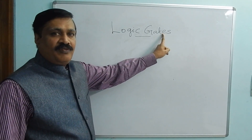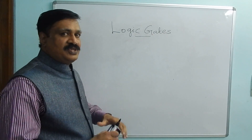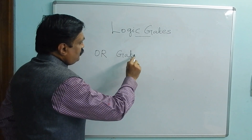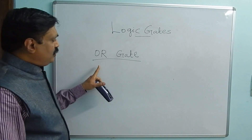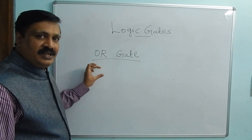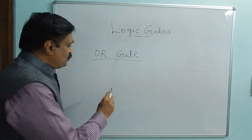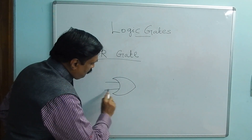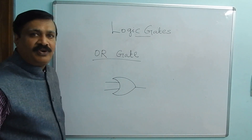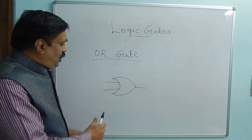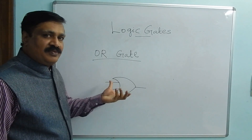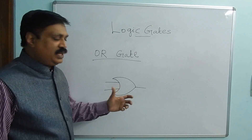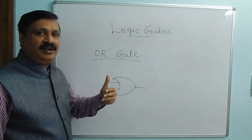In logic gates, we have 3 basic gates. The first one is the OR gate. Here I will write the symbol for the OR gate. This is the symbol for the OR gate. The OR gate is designed by using diodes, resistors, transistors, and everything. Let us see in detail in logic families.